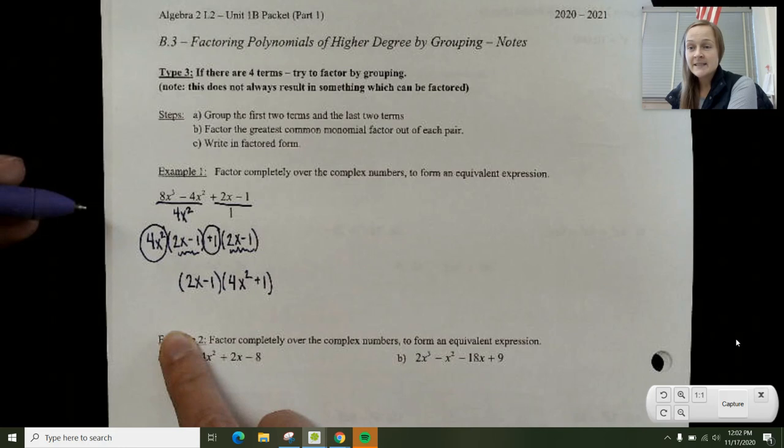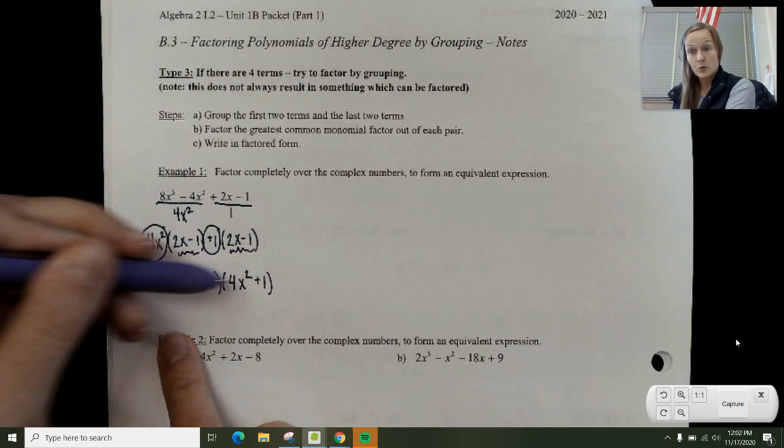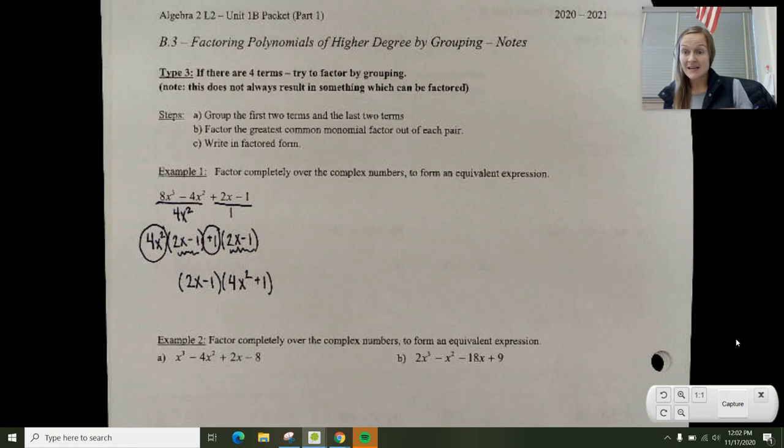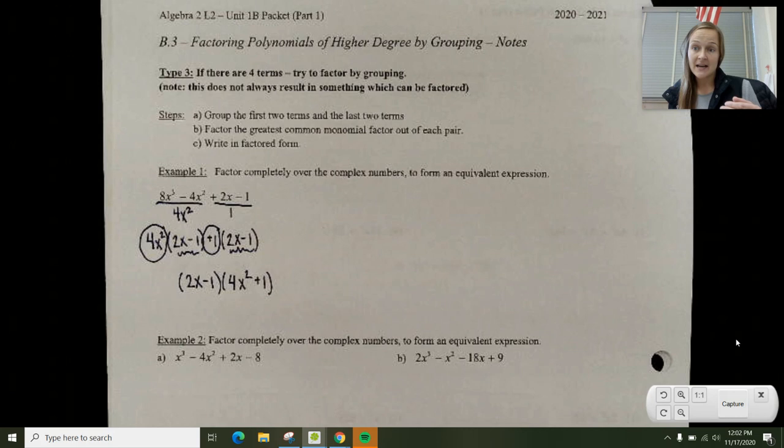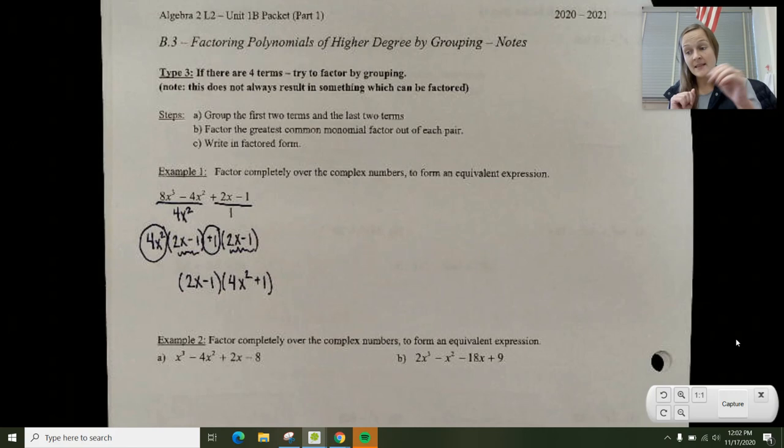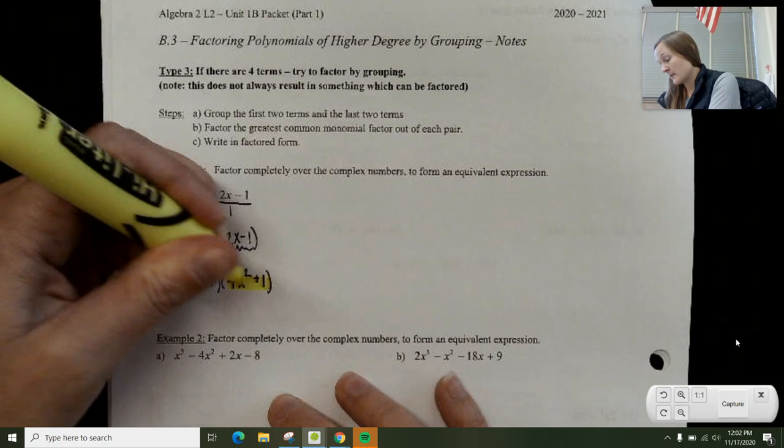Now the only difference between factoring a quadratic trinomial and factoring by grouping - once you have the four terms - is that in this example and in many of these examples, you're not done here. From the last video and the last section, you learned about sum and difference of squares. In this current result, we actually have a sum of squares, 4x² + 1.